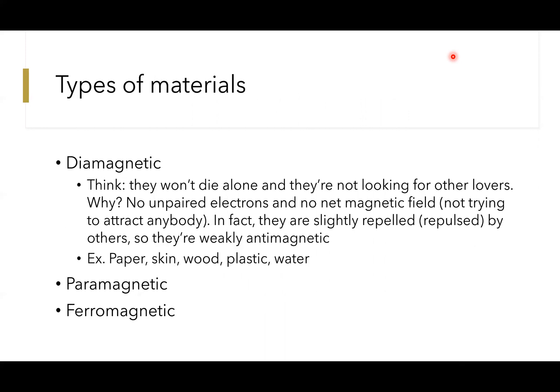Before we dive into the nitty-gritty, let's take a broad view. There are different types of materials falling into three categories: diamagnetic, paramagnetic, and ferromagnetic. Diamagnetic—as a mnemonic, think they won't die alone and they're not looking for other lovers. They don't have any unpaired electrons, they're paired, and they have no net magnetic field.